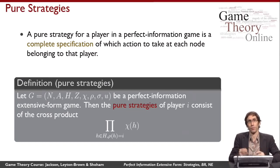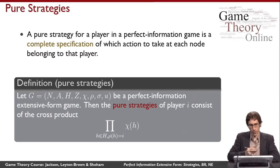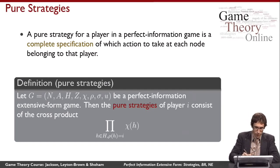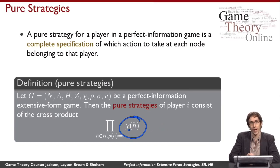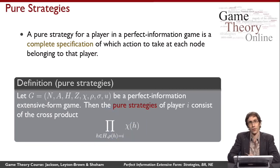When we're counting the number of pure strategies, we're asking how many different sets of proxy instructions is it possible to have. Formally, the pure strategies of a player in a perfect information extensive form game are the cross product of the action sets for that player — the cross product of those sets across all of the choice nodes at which that player gets to make a decision.